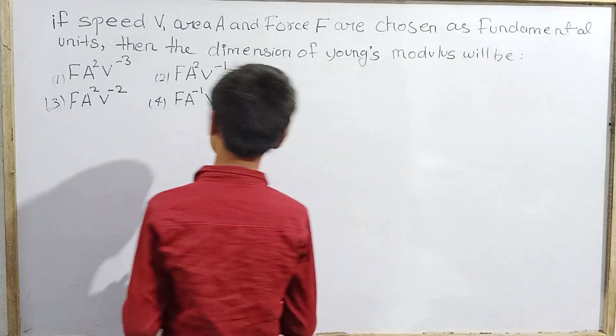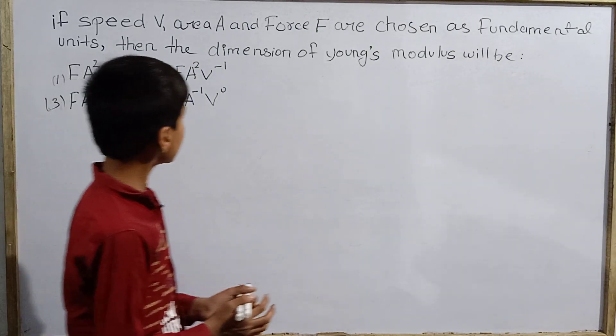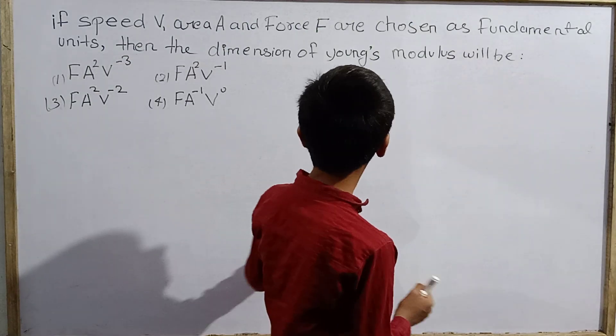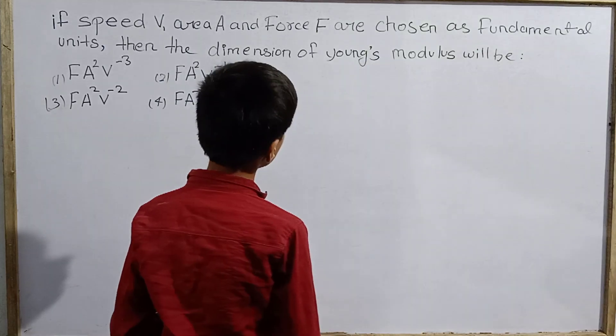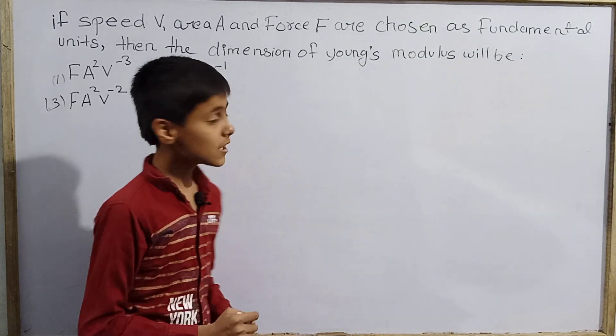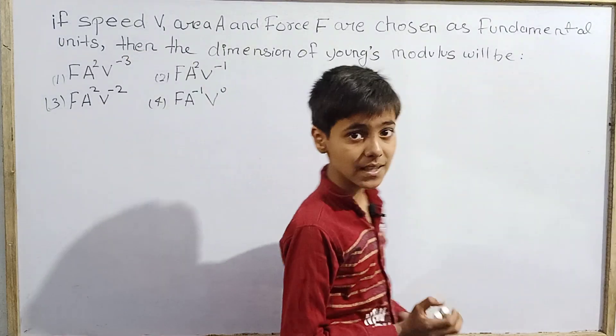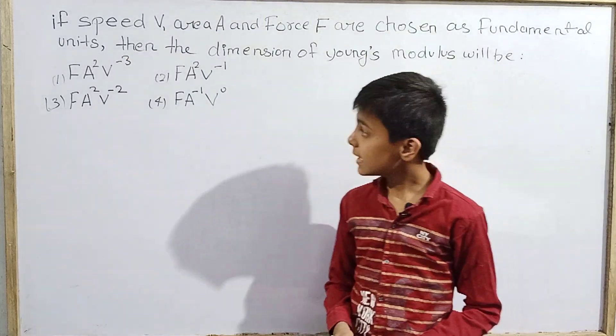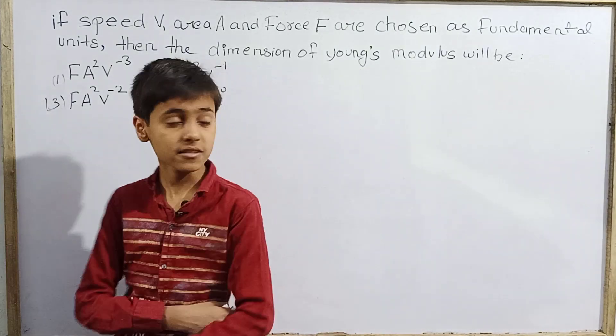I hope you enjoy this question because I find it too interesting. It asks: if speed V, area A, and force F are chosen as fundamental units, then the dimension of Young's modulus will be. First option is FA^2V^-3, then FA^2V^-1, then FA^2V^-2, and finally FAV^-1V^0.